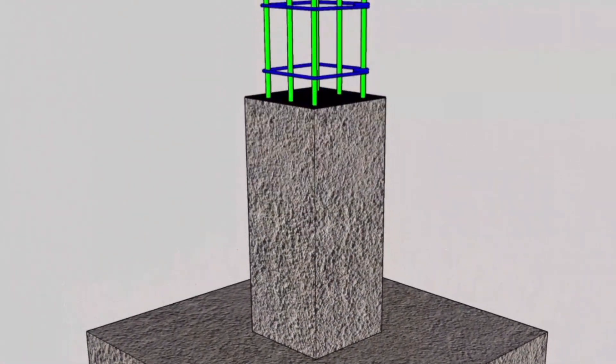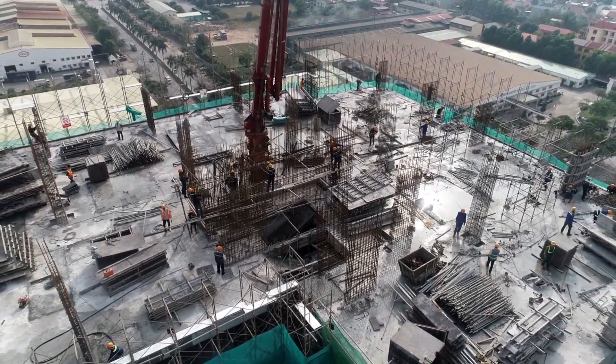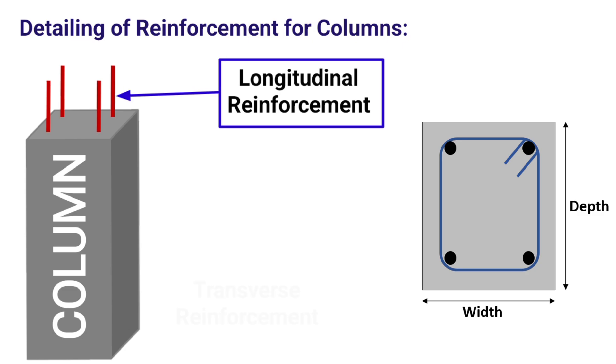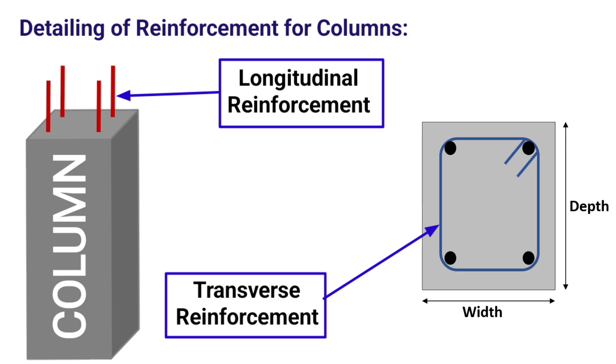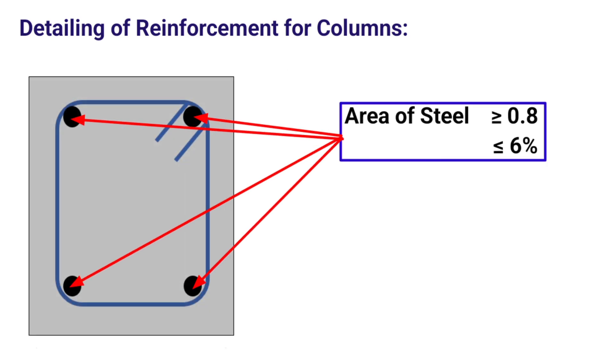Now let's discuss the detailing of reinforcement for a column. Columns are provided with two types of reinforcement bars, that is longitudinal reinforcement and transverse reinforcement. Longitudinal reinforcement is the vertical main bars, and the transverse reinforcement is nothing but the lateral ties, which are also known by the term stirrups when it comes to beams. As per IS 456-2000, the area of cross section of longitudinal reinforcement shall not be less than 0.8% of the gross cross sectional area of the column. Also the maximum area of longitudinal reinforcement should not exceed 6% of the gross cross sectional area of the column.